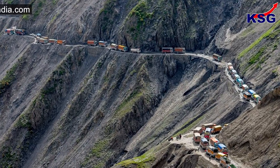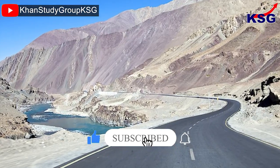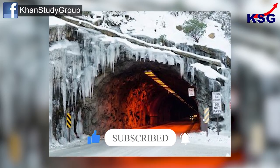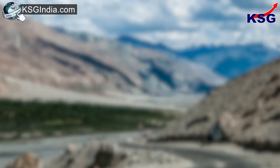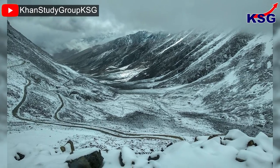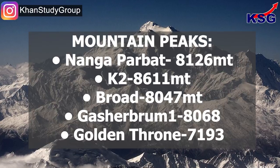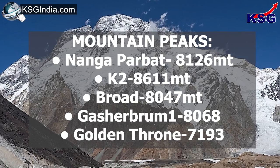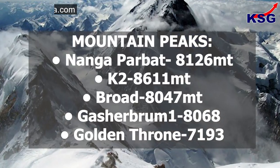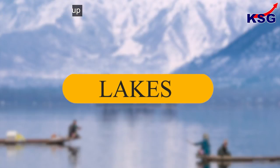Now let us tell you about the passes in these Union Territories. First up is Zojila pass, situated at an altitude of 11,578 feet on the Srinagar–Kargil–Leh National Highway. The Government of India approved the construction of Asia's largest bi-directional Zojila pass tunnel, which will reduce the travel time through Zojila pass to 15 minutes from the current 3.5 hours. Other passes are Changla, Khardungla — at 18,380 feet the highest motorable road in the world — Shingola and Banihal Pass. Talking about the mountain peaks: Nanga Parbat is 8,126 metres, K2 is 8,611 metres, Broad Peak is 8,047 metres, Gasherbrum I is 8,068 metres, and the Golden Throne is 7,193 metres.